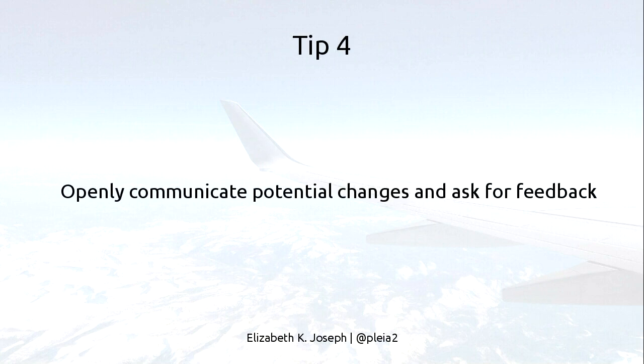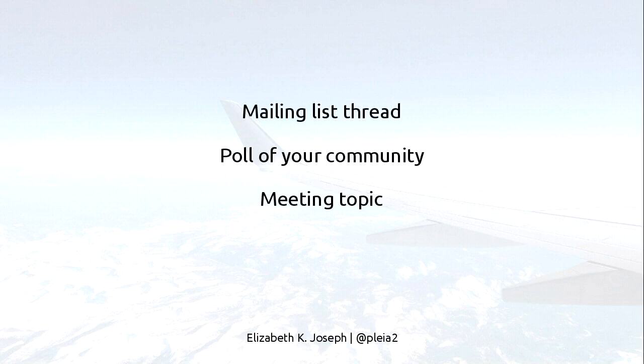Number four: communicate changes in your project — in onboarding, in infrastructure changes — to the community. You can send an email to the developer mailing list, do a poll to get input, or if your project has a central meeting — leadership, infrastructure, or project-wide — you can make it a meeting topic. In OpenStack, we'd send emails like 'it seems like one of those things where we should probably give you a heads up.'